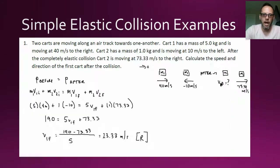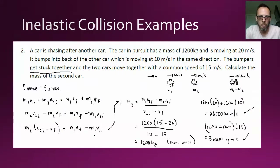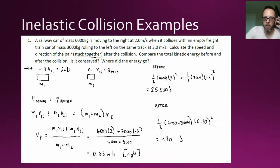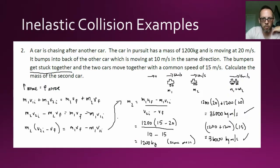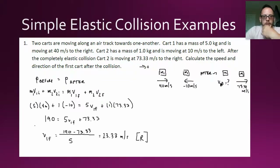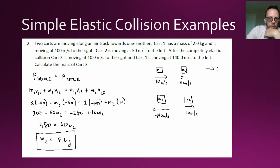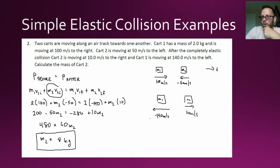We've done four problems where we set up momentum before and after, and in each case we had three of the four momenta. In a purely elastic collision problem, we only have initial conditions — we should be able to predict the final outcomes for any elastic collision with just those initial conditions. That brings us to a true elastic collision problem.